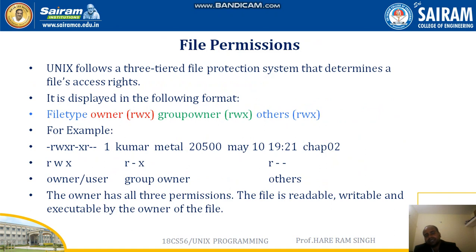Let's study file permissions in detail. Unix follows a three-tiered file protection system that determines a file's access rights. It is displayed in the following format: file type, owner, group owner, and other.